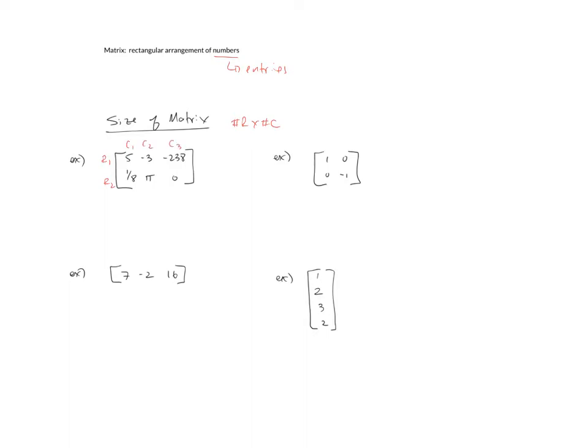column three. The size of that matrix would be two for rows and three for columns, so a two by three matrix. In the second example, you've got two rows and two columns, so this would be a two by two matrix.